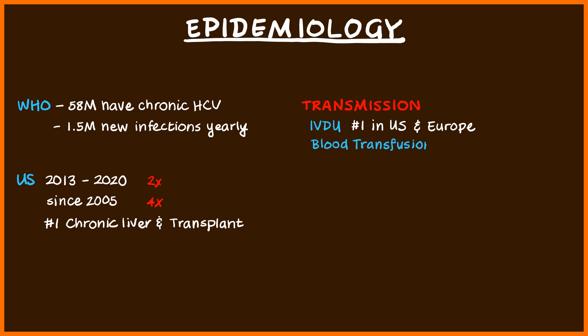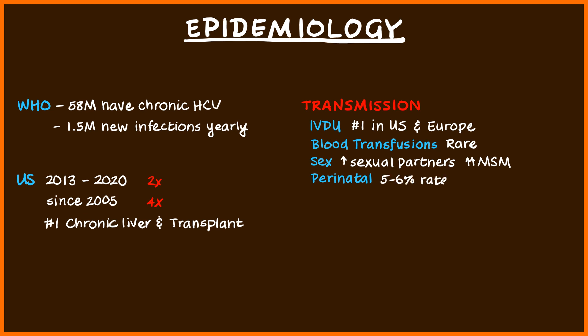Blood transfusions are still a route, however due to screening for antibodies to hepatitis C, it's now pretty rare. Sexual transmission does occur as well — the risk appears to be low in general, but particularly high with people with many sexual partners, and it's much higher in men who have sex with men. Perinatal transmission does occur, with about a 5% to 6% risk of transfer from mother to child, much less than the numbers seen with hepatitis B.